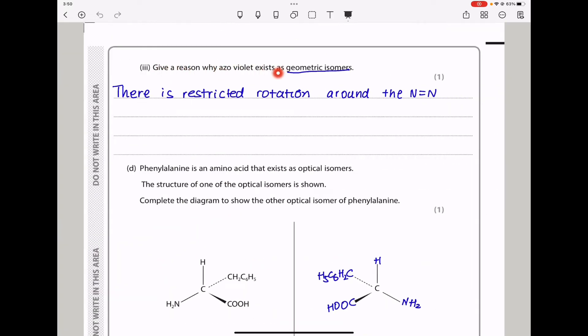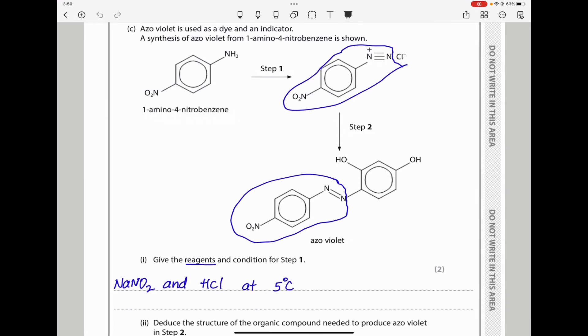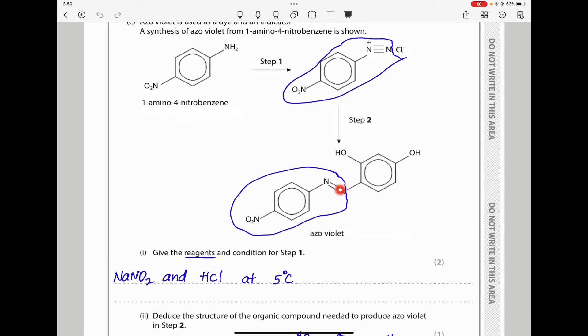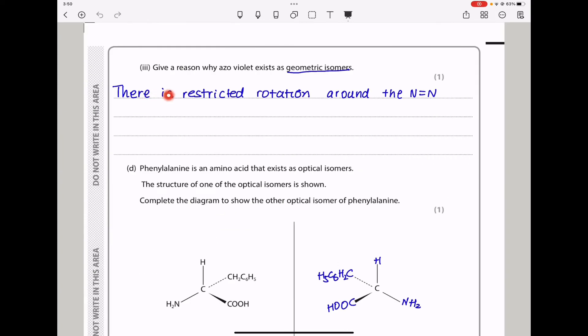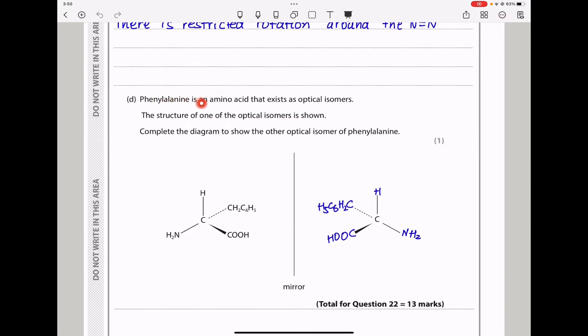Give a reason why azoviolet exists as geometric isomers. Azoviolet has a nitrogen-nitrogen double bond. Around this, there is restricted rotation. There is restricted rotation around the nitrogen-nitrogen double bond, which is why we can say there is geometric isomerism.